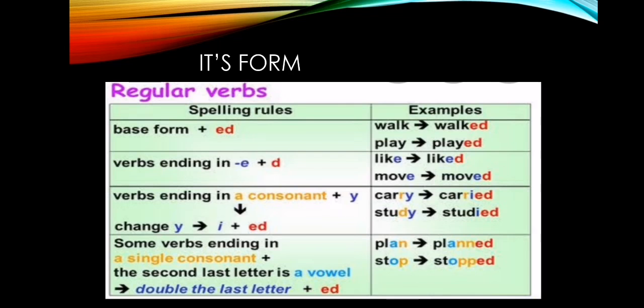Another example: 'study' — this verb ends with -y, and before -y is -d, which is a consonant. So we change -y to -ied: 'study' becomes 'studied'. Some verbs ending in a single consonant where the second-to-last letter is a vowel — we double the last letter and add -ed. Like 'plan': ending is -n, a consonant, but before it is -a, a vowel. So we double: 'planned'. 'Stop' becomes 'stopped'.